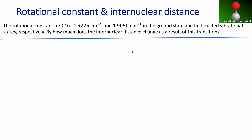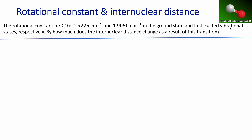In this video we're going to be talking about rotational constants and how to use them to calculate the internuclear distance in a diatomic molecule — particularly carbon monoxide. You can see in this animation the coupling between rotations and vibrations in that molecule. These methods can be applied to other heteronuclear diatomic molecules as well.